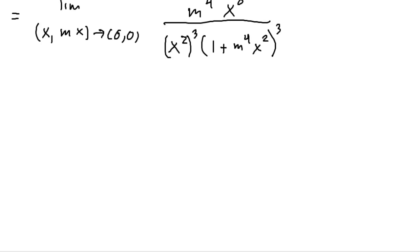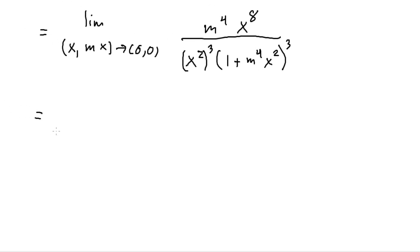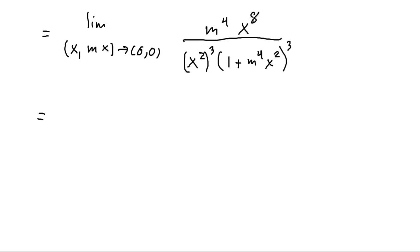And note that we can factor out x squared in the denominator. So we'll get m to the fourth x to the eighth. Then we're going to factor out an x squared to the third times one plus m to the fourth x squared. And this will all be to the third. And, again, a little bit of algebra. We see this is really x to the sixth. It cancels with the x to the eighth. And so we're going to be left with this limit.